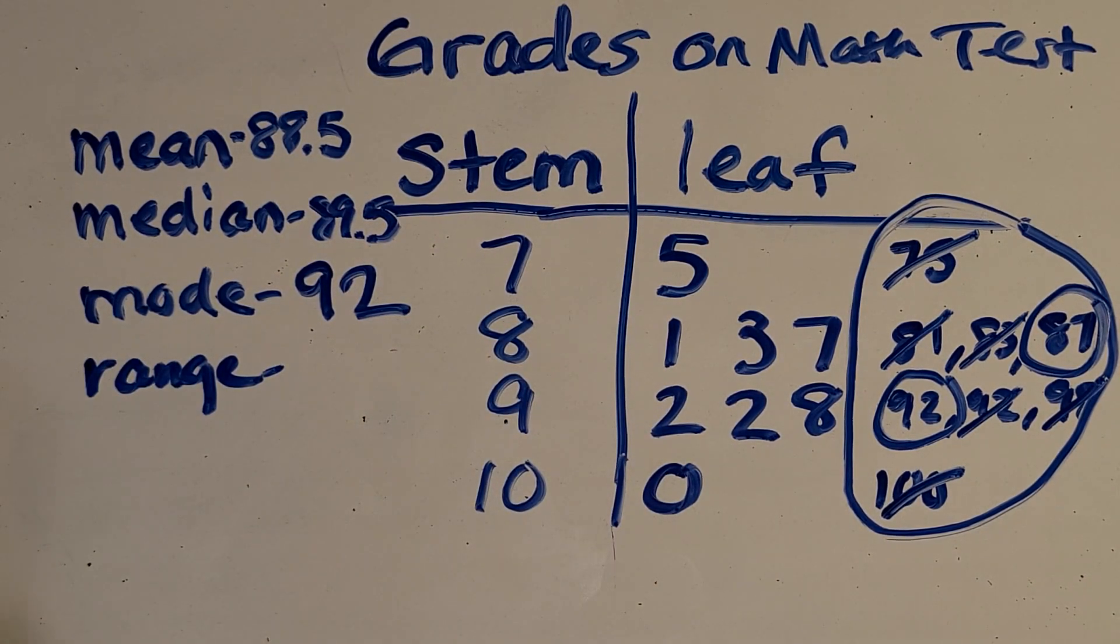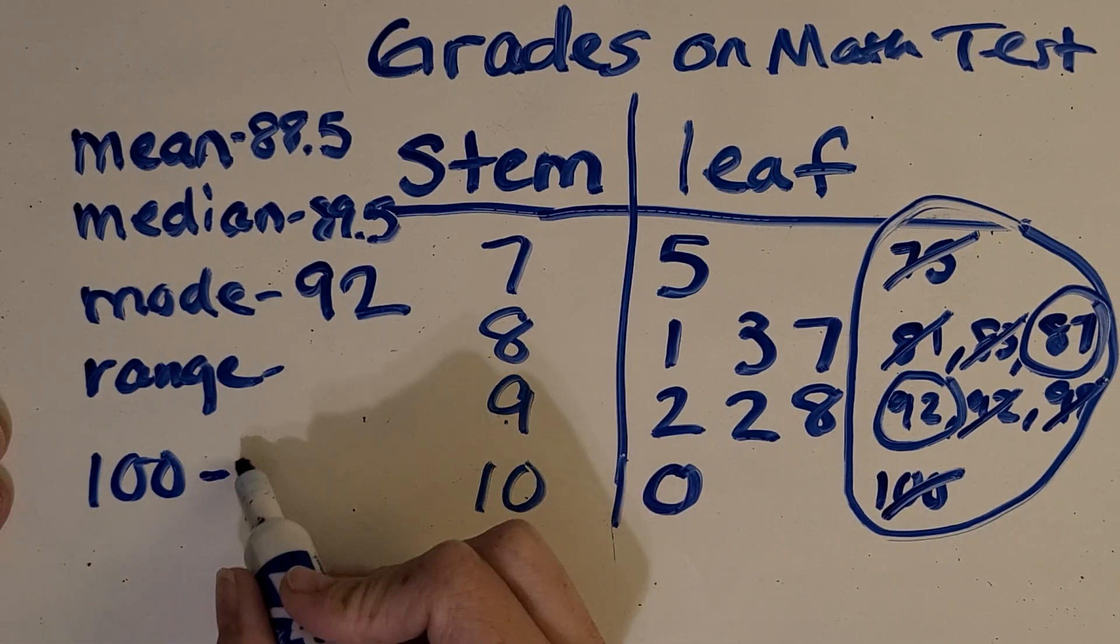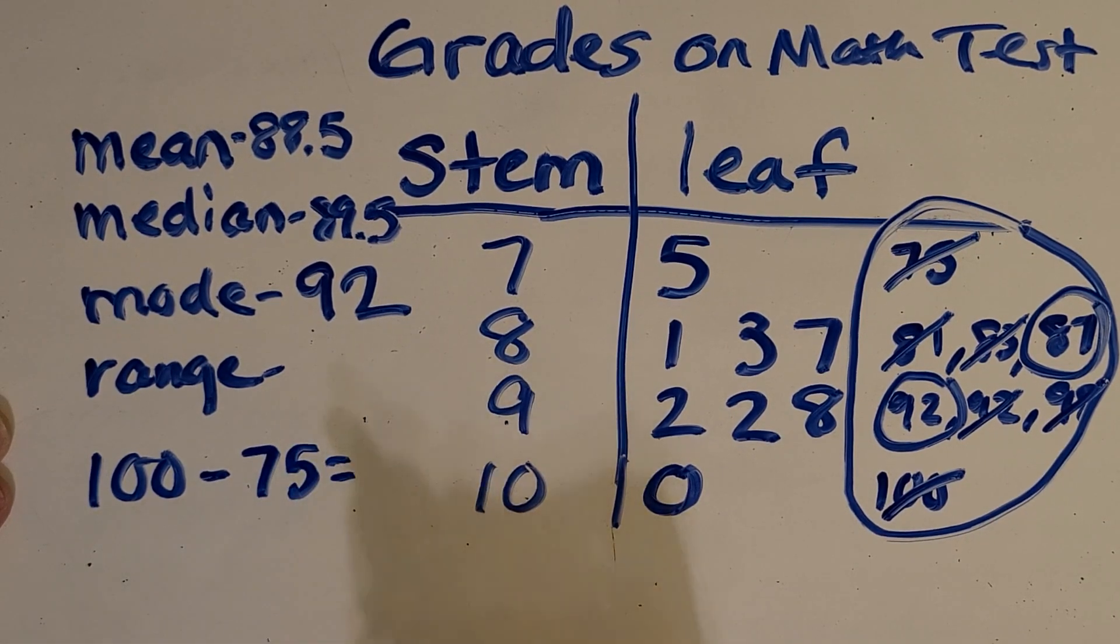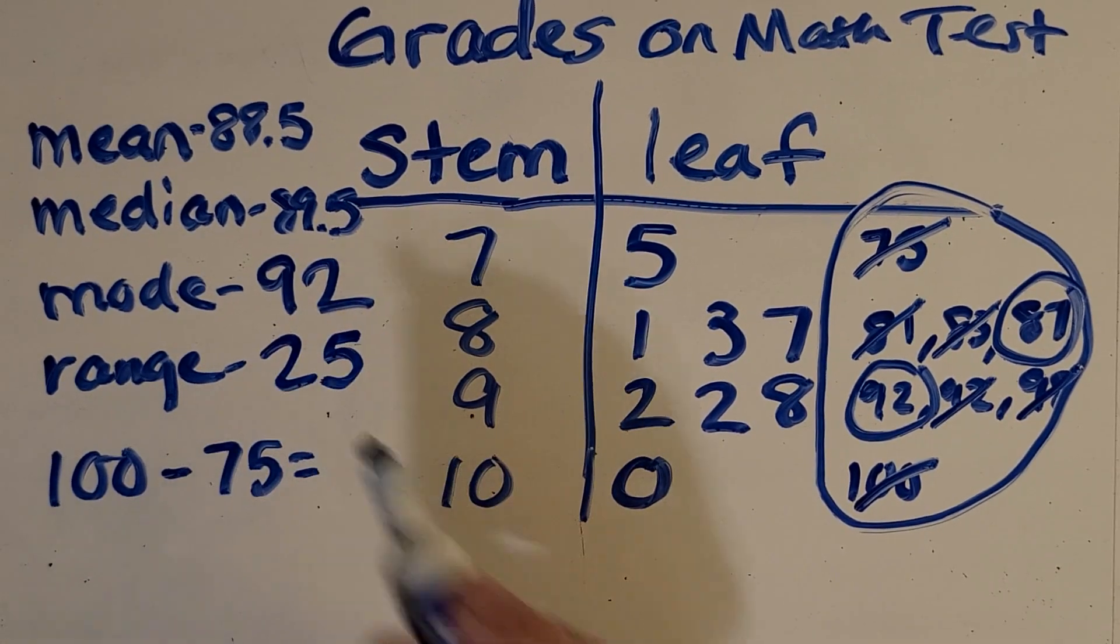So last thing is range. And range is just the difference between the greatest and the least in this data set. So what is the range of grades on the math test? So what do you think you can do to find that range? So you can, since it's the difference between the greatest and the least, you can just do a simple subtraction problem to find the range. So in this case, what is the range? You got it. It is 25.